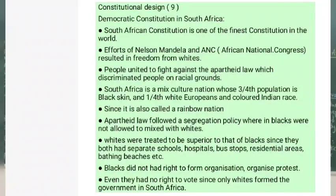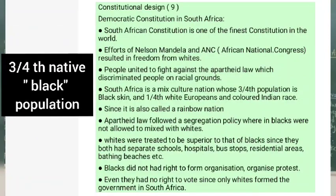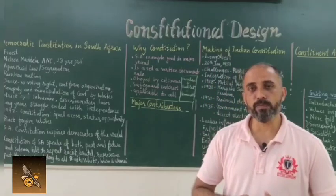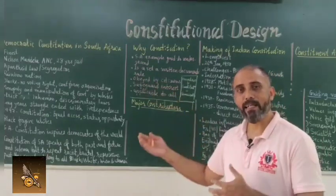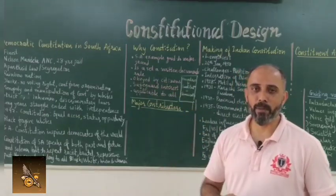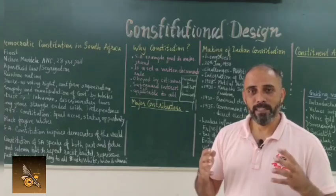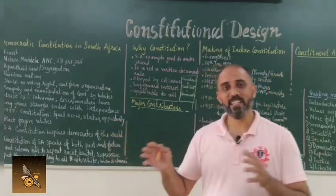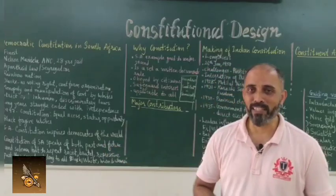In this nation, three-fourths of the population were the native blacks, while one-fourth comprised whites and the Indian population, also called the mixed population. This is the reason the country was recognized as a rainbow country.